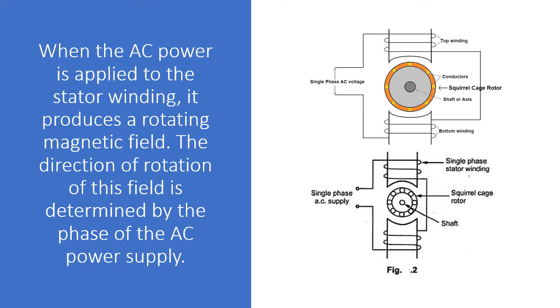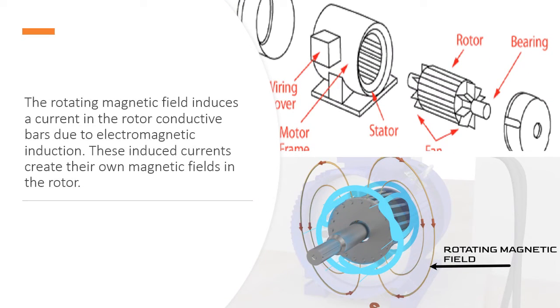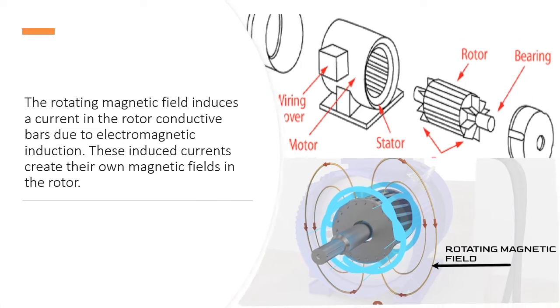The direction of rotation of this field is determined by the phase of the AC power supply. The rotating magnetic field induces a current in the rotor conductive bars due to electromagnetic induction. These induced currents create their own magnetic fields in the rotor.